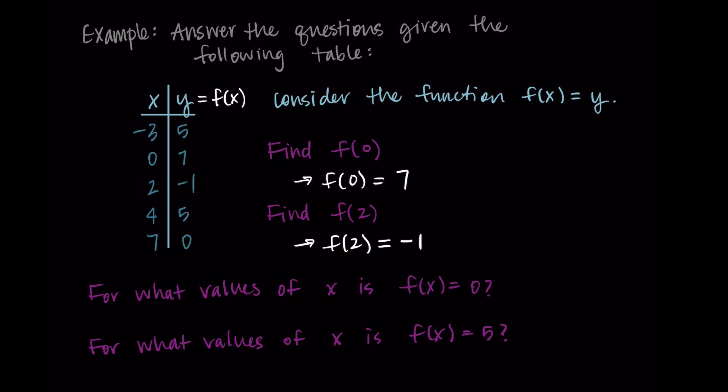So these ones we were given an input, and we had to find the corresponding output. Now these other problems are going to go the other direction. So when it says for what values of x is f of x equal to zero, this is asking us for x values as our solution, and it's giving us the y values. So it's saying f of x is equal to zero, zero is our output or a y value. So I'm going to look for zero in the y column.